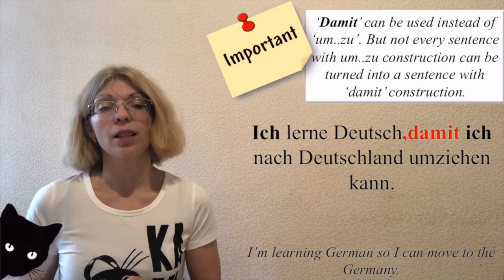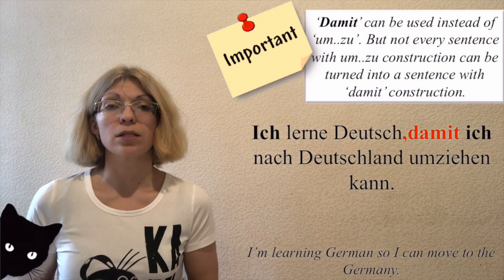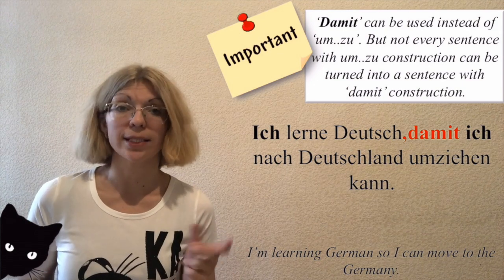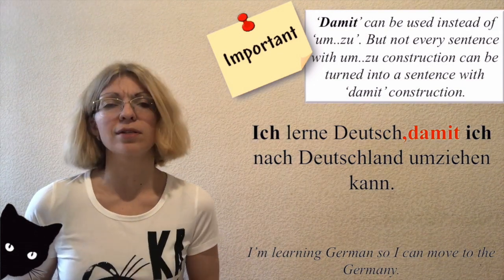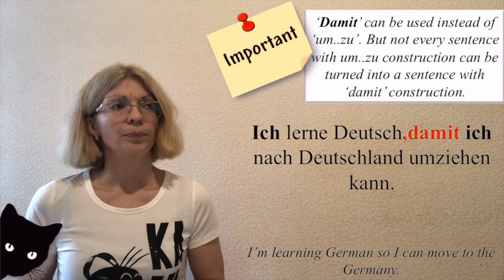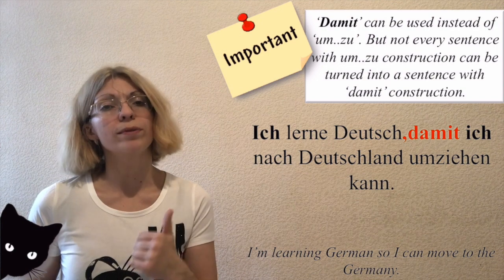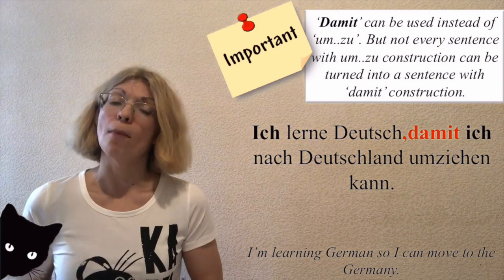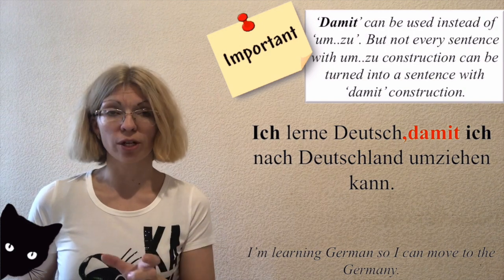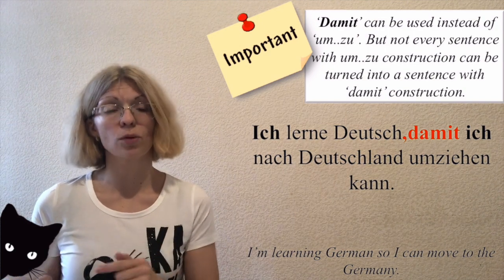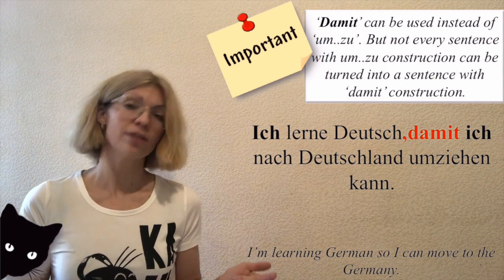'Ich brauche Geld, um sich etwas Schönes kaufen zu können.' The third important thing is that you may come across sentences where there is one subject and 'damit' is used instead of 'um zu'. For example: 'Ich lerne Deutsch, damit ich nach Deutschland umziehen kann.'